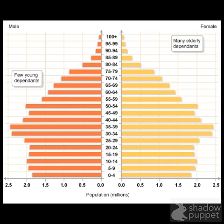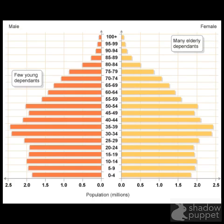Another way of breaking down population is through a population pyramid. This shows us a breakdown by gender — male on the left, female on the right — with age groups in the center column. We can see what the male and female populations in a region look like and compare them in terms of numbers and age groups.